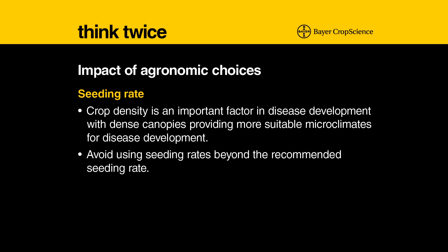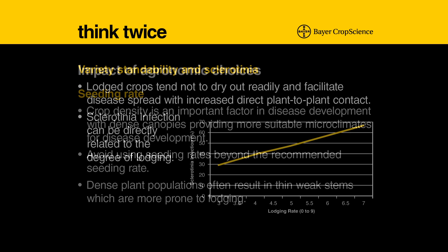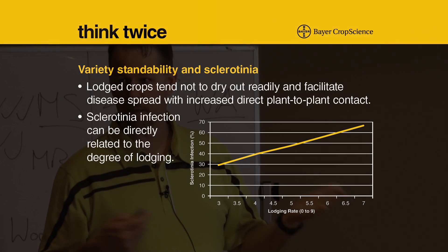Denser canopies have more suitable microclimates for disease development. Overly dense populations can result in thinner, weaker stems which are more prone to lodging. In addition to seeding rate, variety standability — the choice of variety and whether or not it has good standability — can certainly have an influence on disease development.